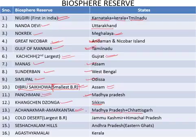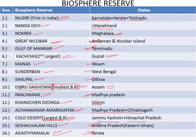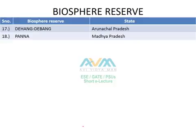Next is the Cold Desert Biosphere Reserve in the states of Jammu and Kashmir and Himachal Pradesh. The Cold Desert Biosphere Reserve is the largest Biosphere Reserve in India. After that, the Seshachalam Hills Biosphere Reserve in the state of Andhra Pradesh. Next is the Agasthyamalai Biosphere Reserve in the state of Kerala. Then the Dihang Dibang Biosphere Reserve in the state of Arunachal Pradesh. The last is the Panna Biosphere Reserve in the state of Madhya Pradesh.